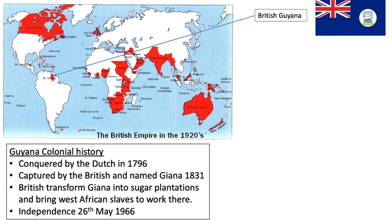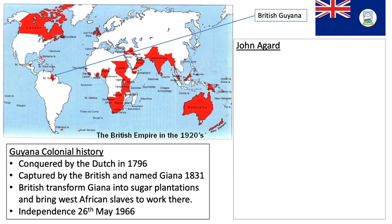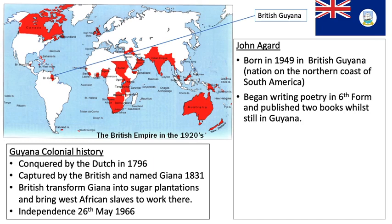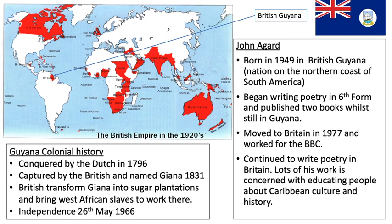If we look at John Agard in relation to this, he's born in 1949 in British Guyana — still a member of the British Empire at that time. He began writing poetry in the sixth form while there and published two books while still in Guyana. He moved to Britain in 1977 predominantly to work for the BBC. He's continued to write poetry in Britain, and lots of his work is concerned with educating people about Caribbean culture and history, and some of the problems he's faced coming from a country with such a strong colonial history and presence.